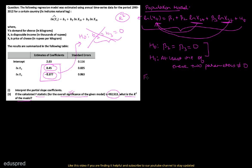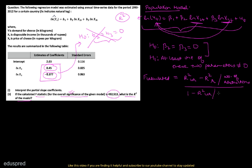The formula for the F-calculated statistic is: R-squared unrestricted minus R-squared restricted, divided by the number of restrictions, all divided by 1 minus R-squared unrestricted divided by the degrees of freedom in the unrestricted model. This is the formula we are going to work with.